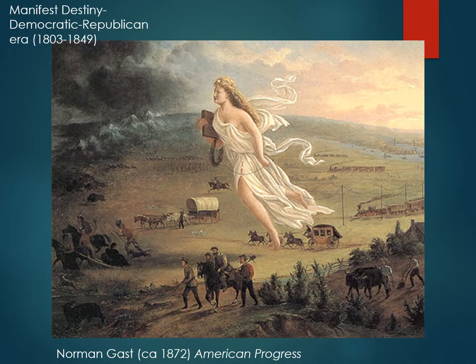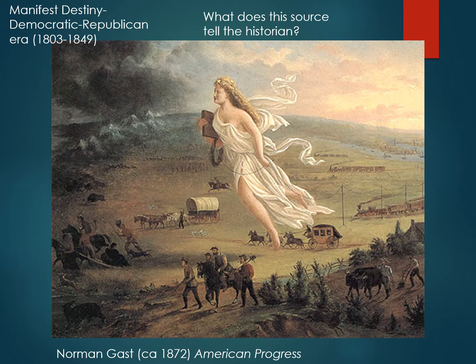So first, I want you to take a look at this painting by Norman Gast. It's an 1872 painting titled American Progress. It's depicting manifest destiny of the Democratic-Republican era, running from Thomas Jefferson through President James K. Polk. Take a look at this and think to yourself: what does this piece of artwork symbolize? What does it communicate to you? What do you see here?